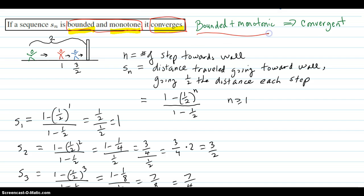So bounded and monotonic implies convergent. So for example, the classic case of a person walking toward a wall. They start off two feet away from the wall, and each step they take is half the distance to the wall. So on the first step, they've gone one foot.